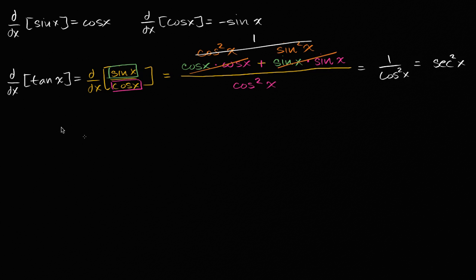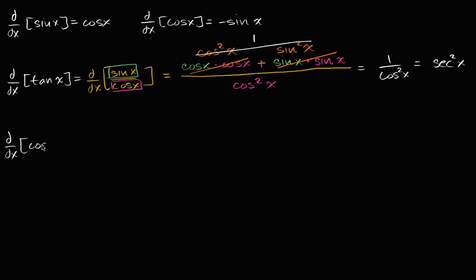That was pretty straightforward. Now let's do the reciprocal of the tangent function, which is cotangent. So let's find d/dx of cotangent of x.